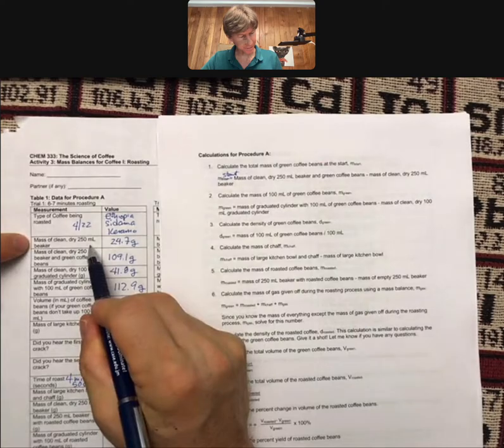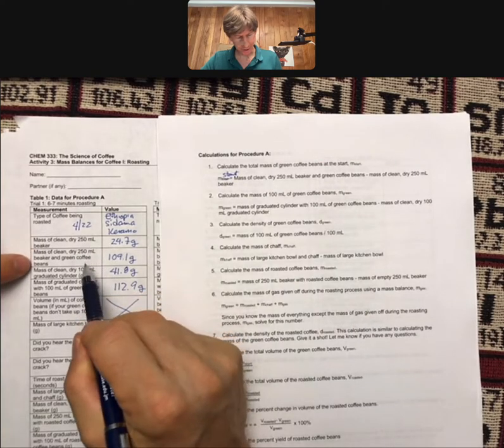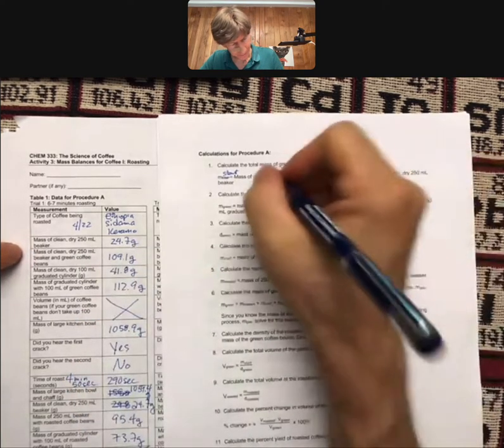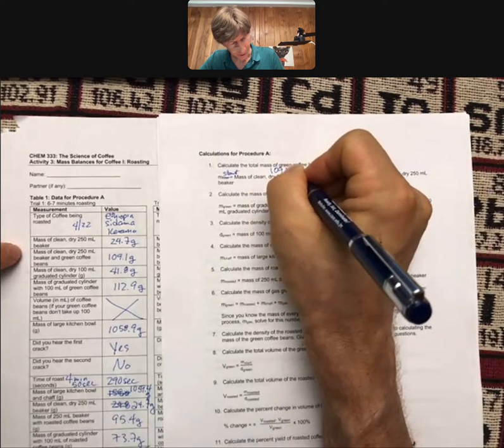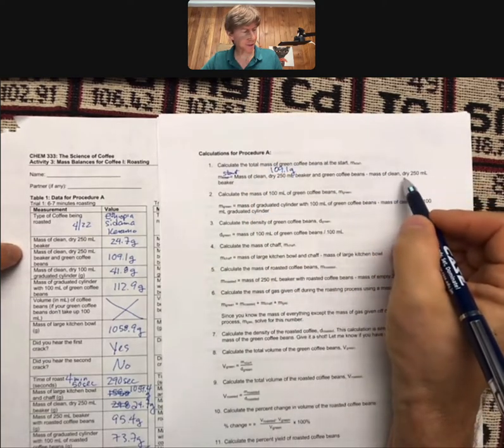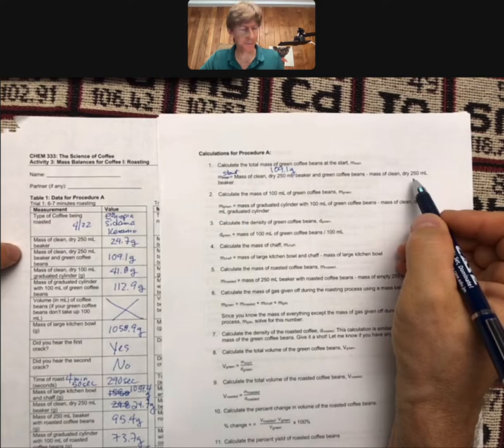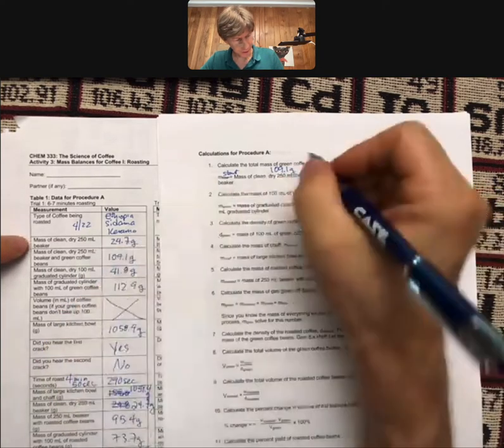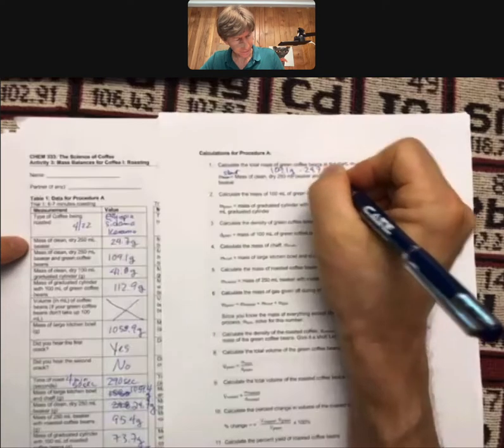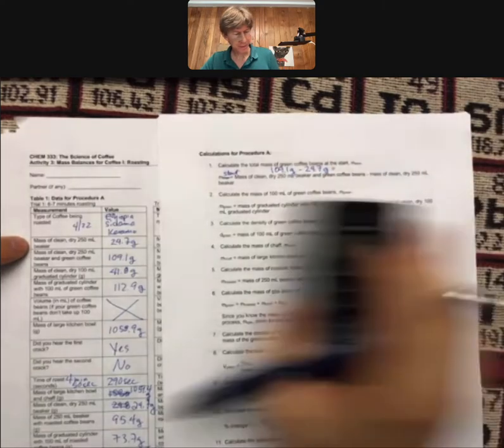So 109.1 grams minus mass of clean dry 250 milliliter beaker, 24.7. Your numbers of course will be different.